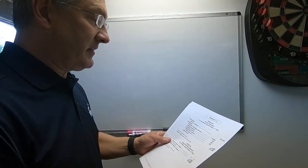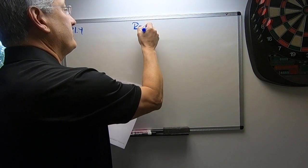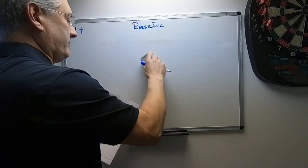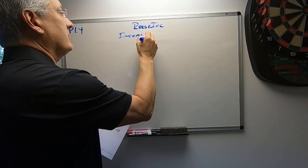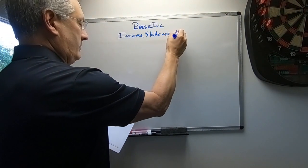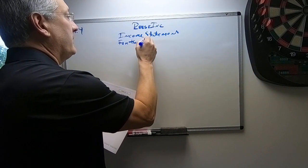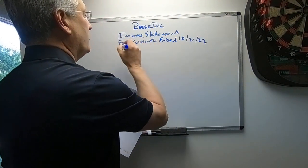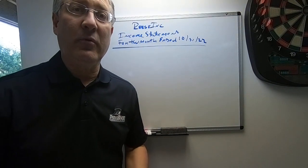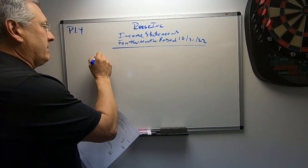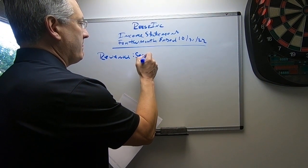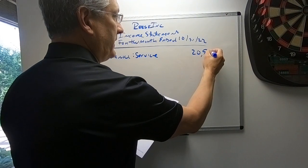Now that all accounts are labeled, we can prepare the financial statements. This is the Reese Incorporated income statement for the month ended October 31, 2022. The title is very important to put on your financial statement. Revenue is service revenue of $20,920.